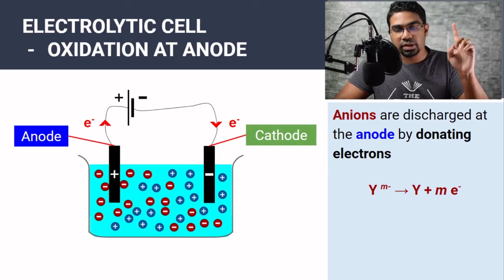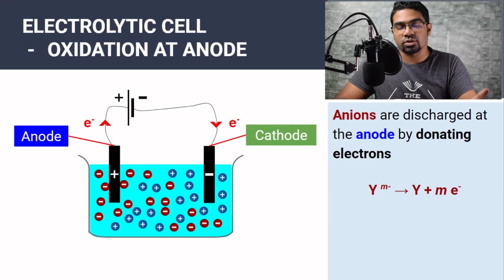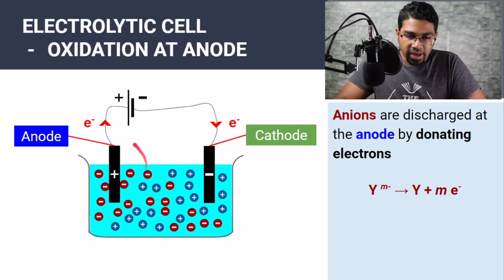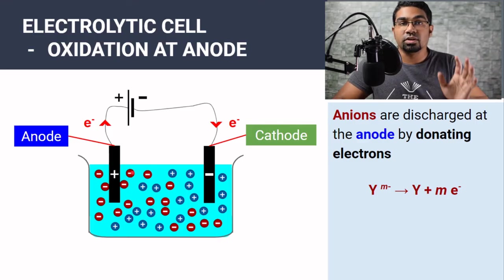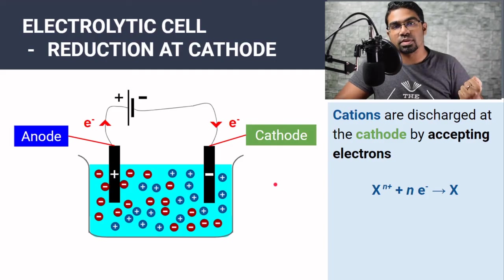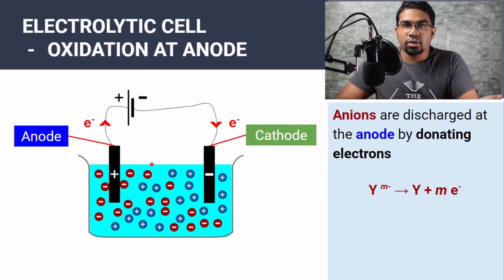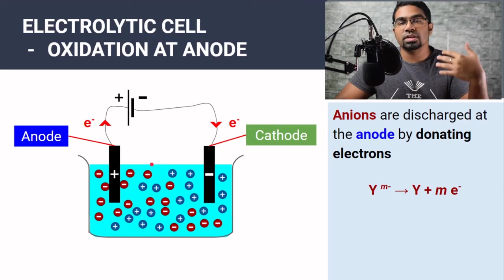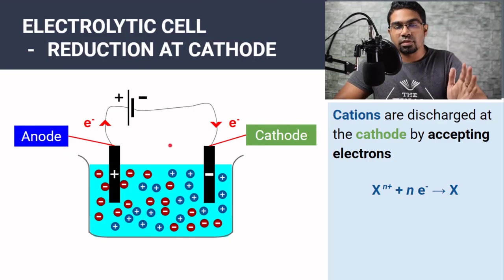By definition, oxidation is when electrons are lost and reduction is when electrons are gained. So here at the anode, we have discharge of anions. Negative ions have extra electrons and they are being donated to the external circuit — so oxidation is taking place. For cations, they are accepting electrons from the external circuit, so reduction is taking place. Since by definition anode is where electrons are donated, oxidation will always take place at the anode. And since electrons are always accepted at the cathode, reduction will always take place at the cathode.